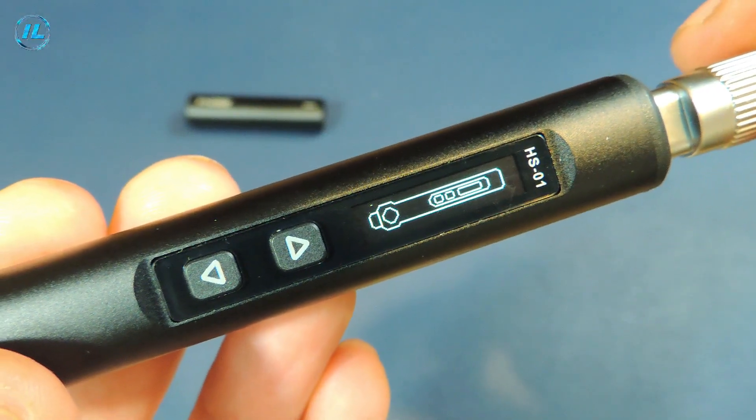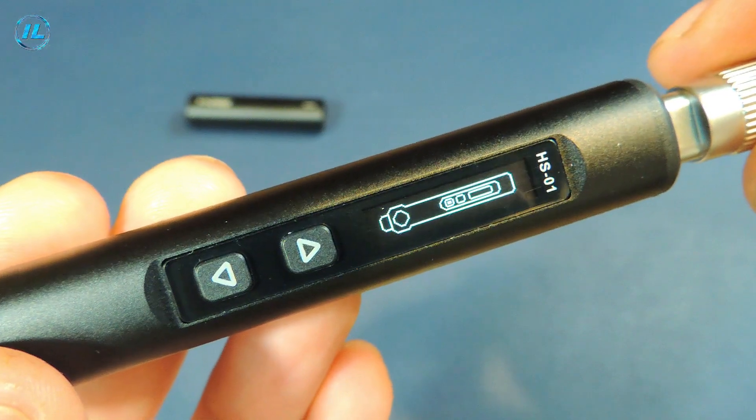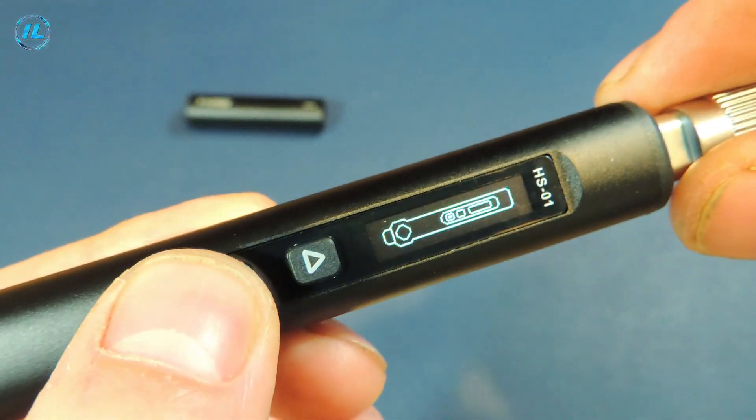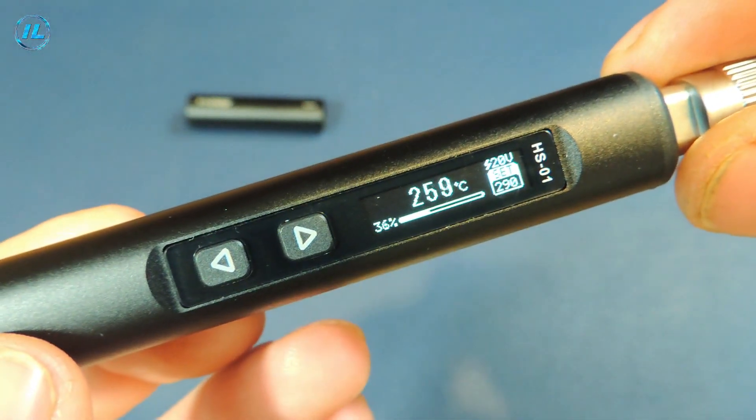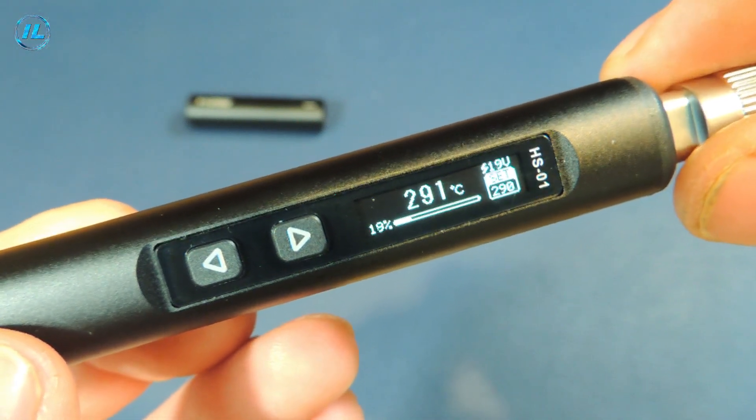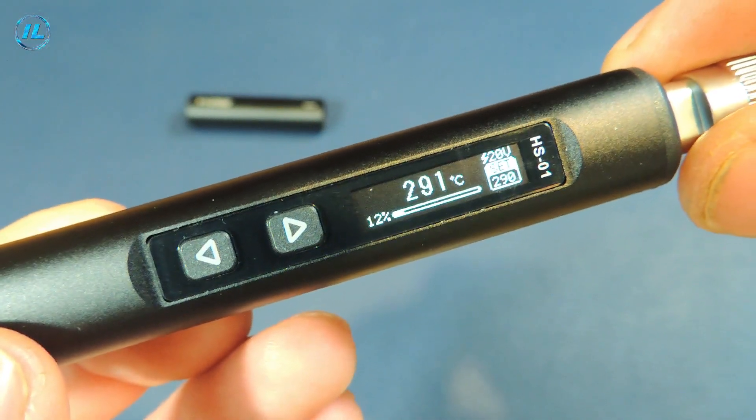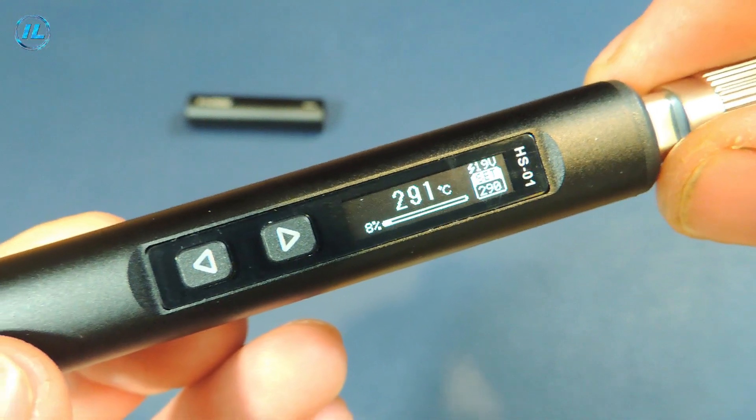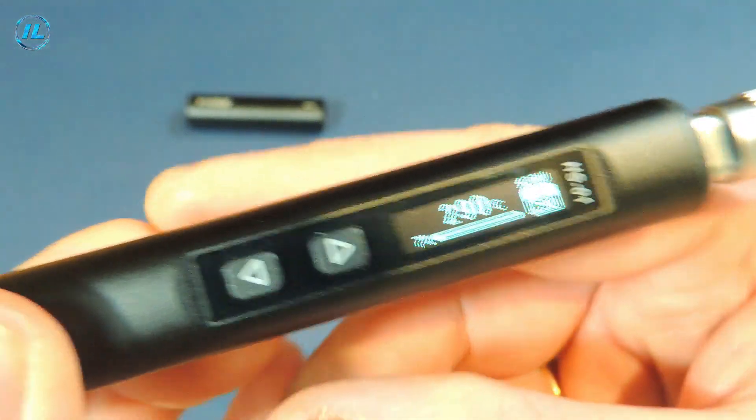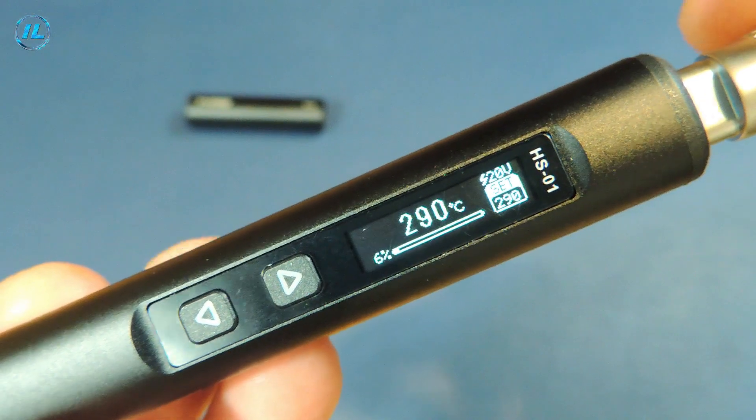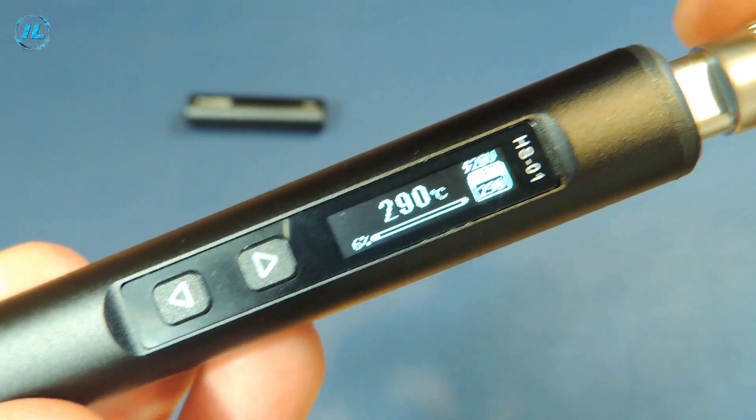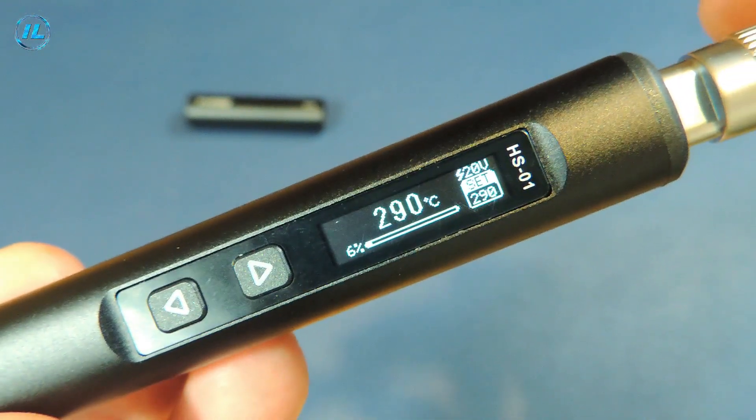As you can see, the soldering iron suggests that you need to press the left button to get started. In just 5 seconds, the soldering iron gained operating temperature, 290 degrees. As I said, this soldering iron has many settings, which makes working with it very convenient.